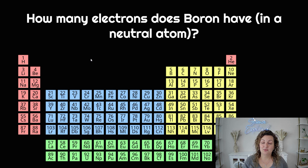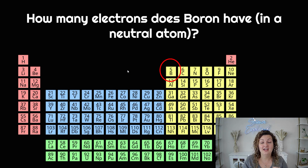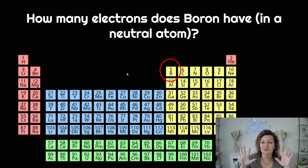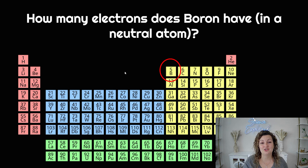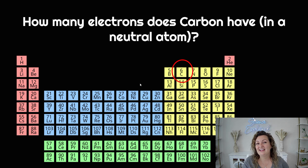So how many electrons does boron have in a neutral atom? Look for B for boron — you can see the atomic number is 5. Electrons have to equal protons in order to cancel each other out. If I have 5 positive protons, I'm going to need 5 negative electrons in order to cancel each one out and end up with 0, so that I do not have a charge in that atom. How many electrons does carbon have? We know it has 6 protons, so it also has 6 electrons.